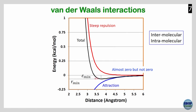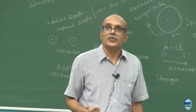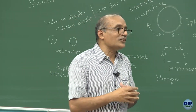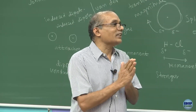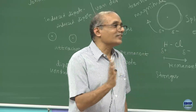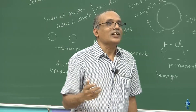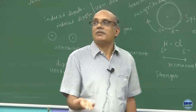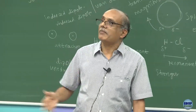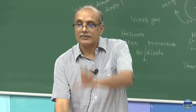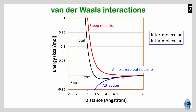To remember Van der Waals interaction, consider someone like your parent or roommate. You like them if they are at a distance; if they come very close — checking your phone, nagging you — interaction becomes repulsion. So it is attraction at a certain distance, strongly repulsive if too close. Van der Waals interaction is between two induced dipoles: mildly attractive, strongly repulsive. Are there any questions about permanent dipole or induced dipole?